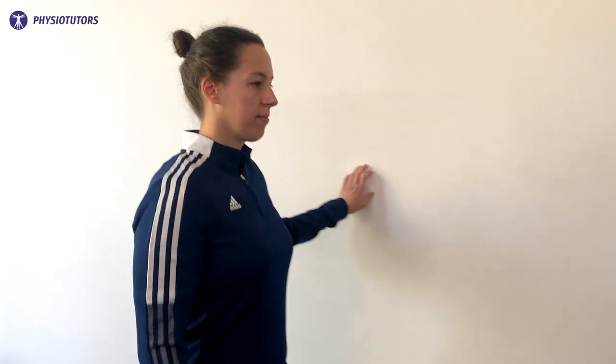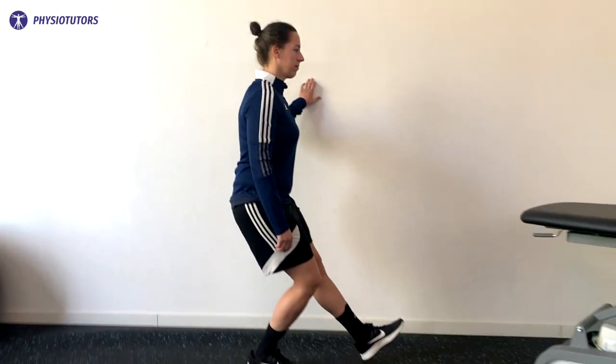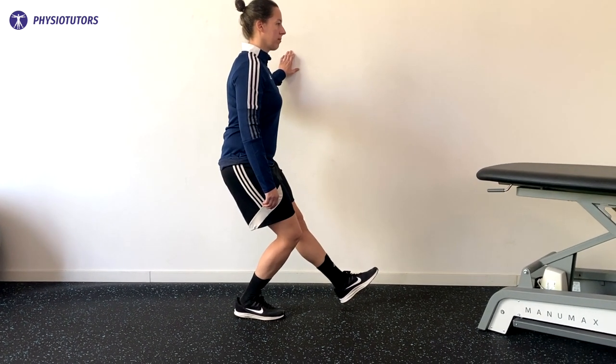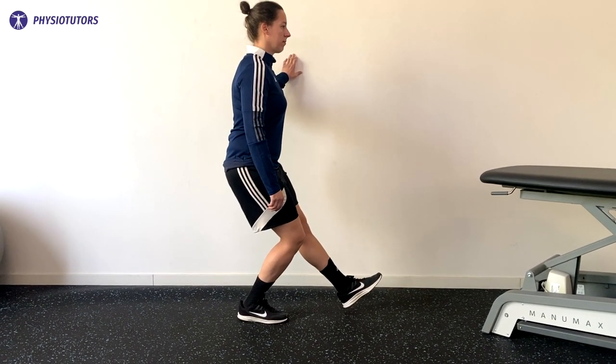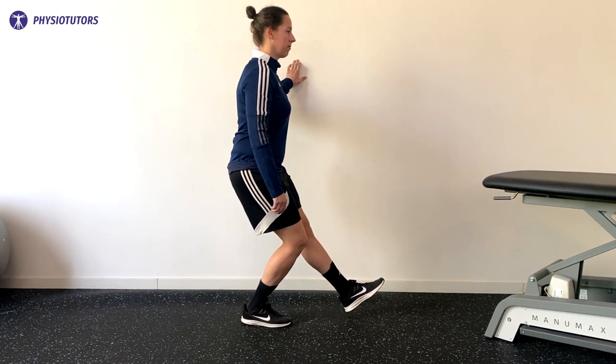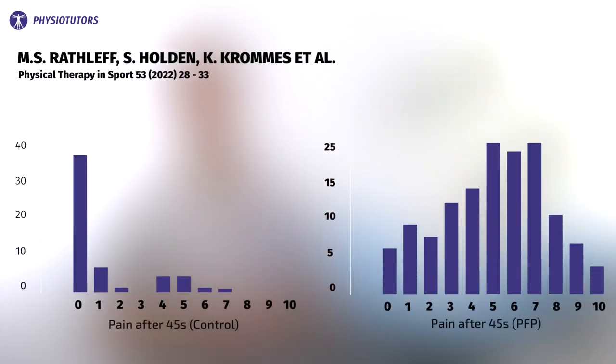How is this 45-second test performed? Prior to beginning the test, a score on the Numeric Pain Rating Scale is given from 0 to 10. Then the patient is instructed to perform a single leg squat with the knee in 60 degrees of flexion and the trunk slightly forward. This position has to be held for 45 seconds, and it was allowed to place a hand on the wall for balance. The study concluded that participants with patellofemoral pain reported pain after the test while the healthy controls did not. So, the test was able to differentiate between individuals with patellofemoral pain and controls.